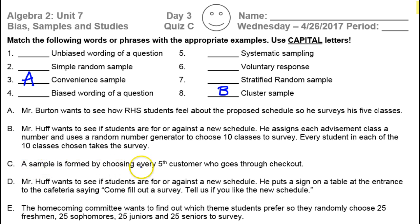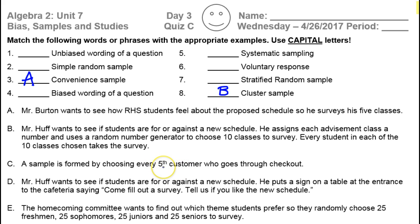A sample is formed by choosing every fifth customer who goes through checkout. Which sampling method is that? That's going to be your systematic. Systematic is the one where it's like every fifth person, every tenth person, or whatever.